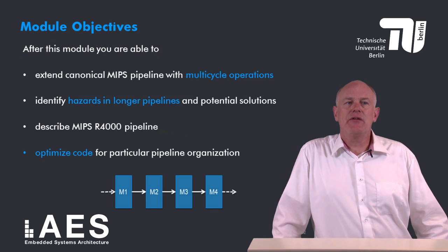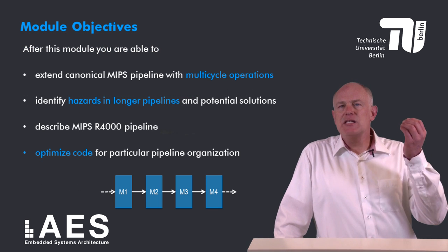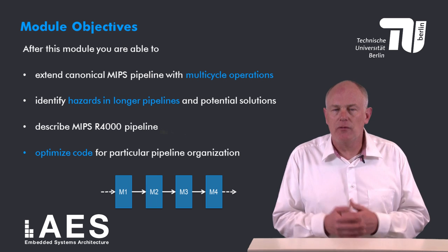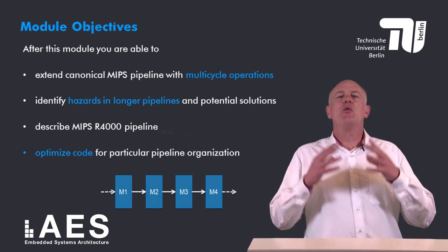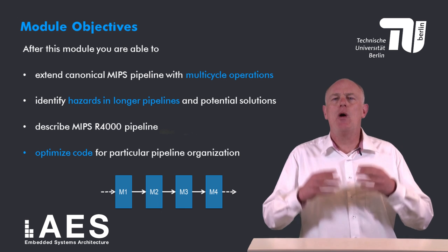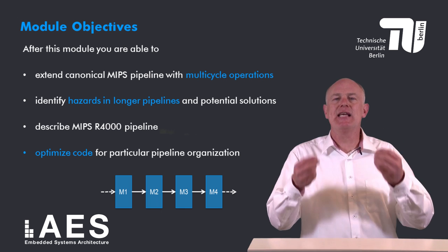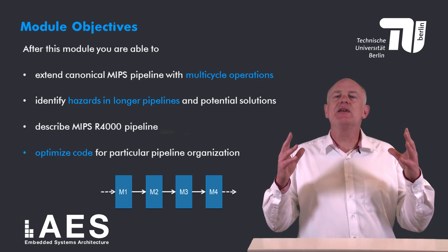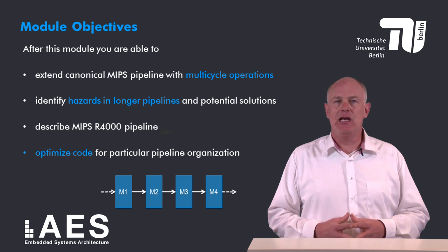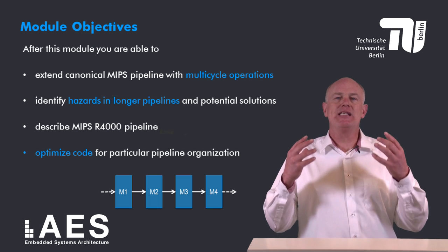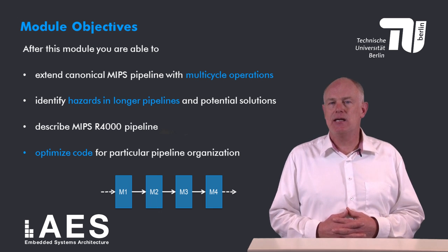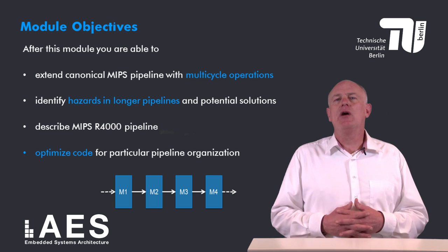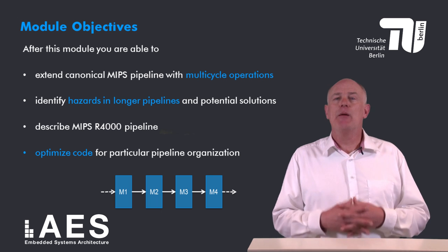First, the objectives of this module. After this module I expect you to be able to extend the canonical five-stage MIPS pipeline with multi-cycle operations that take more than a single cycle to execute. Second, you should be able to identify the potential hazards in longer pipelines and present solutions to these hazards. Third, you should be able to describe the pipeline of the MIPS R4K processor.